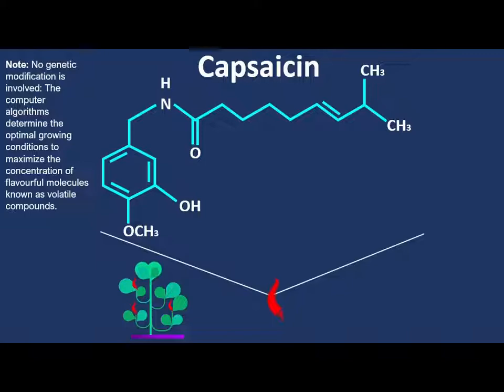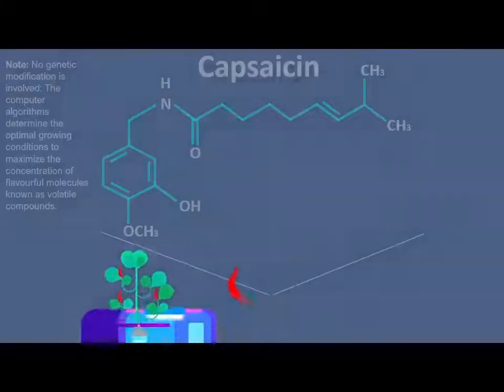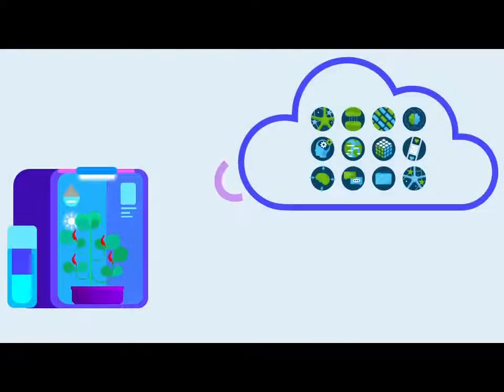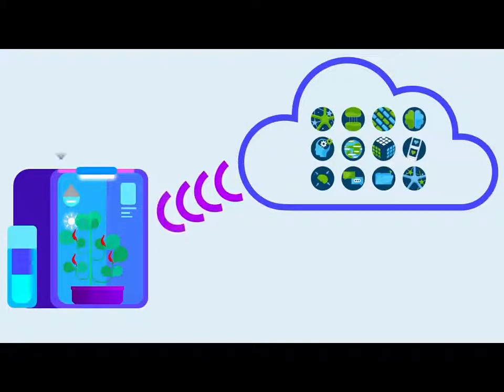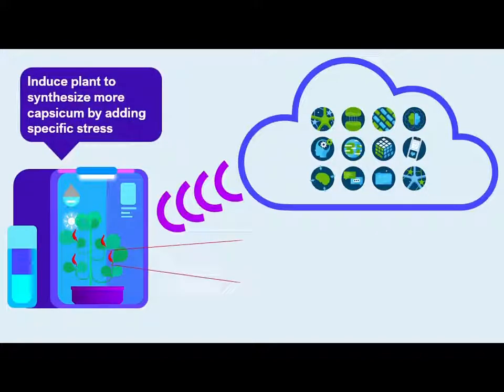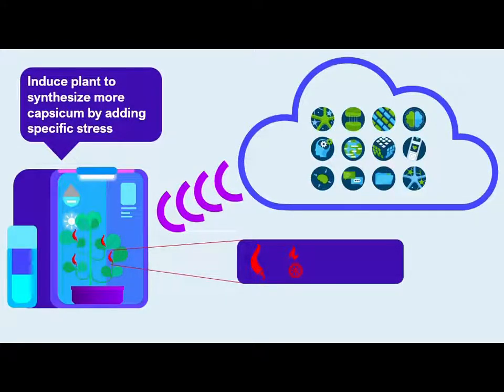The computer algorithms determine the optimal growing conditions to maximize the concentration of flavorful molecules known as volatile compounds. By modulating required parameters, Elysium can induce plants to synthesize more capsaicin.